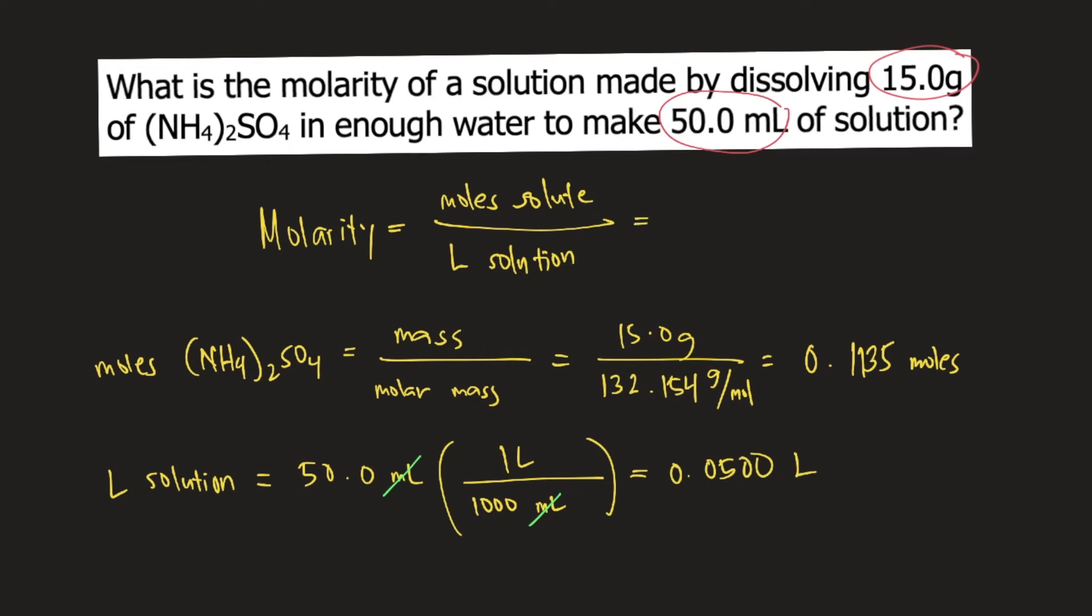Now that we have the moles and the liters of solution, we can plug these into the equation: 0.1135 moles divided by 0.0500 liters.